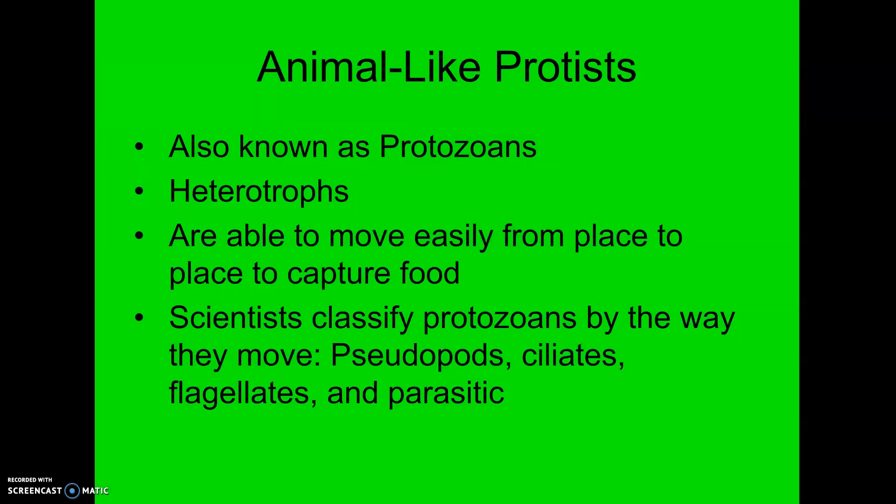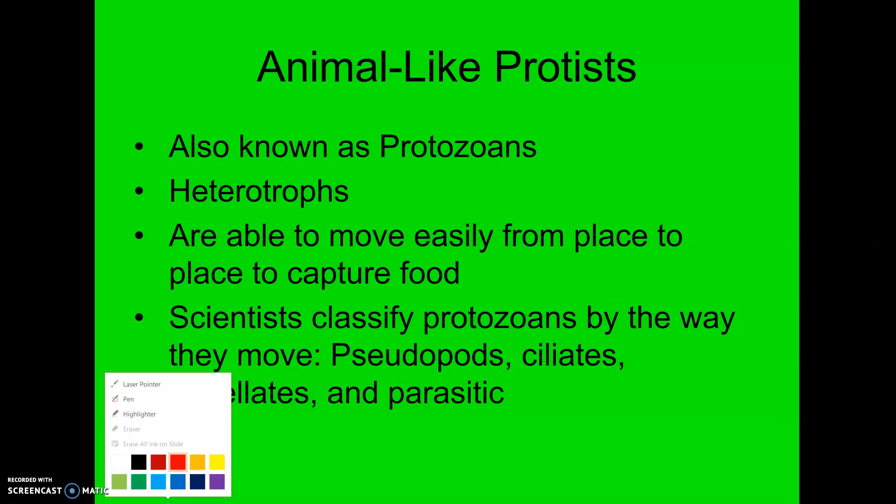Animal-like protists we're going to do first. They are known as protozoans — 'zoa' refers to animals, so it literally translates to 'first animals.' They are heterotrophic, so they have to obtain their food. Typically they are classified by how they move. So they may move by pseudopods, which are false feet. Ciliates move by cilia. Flagellates will have a single tail, a flagellum. And then there's some that don't move and they're just parasitic — they live inside other organisms and can cause diseases. I'm going to show you some pictures of all of these, and we're going to do a lab where you're going to look at them as well.